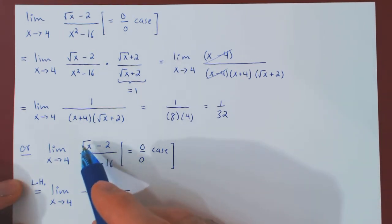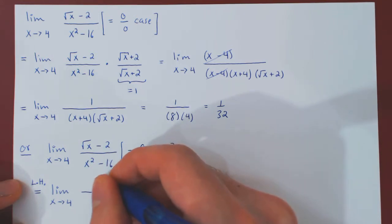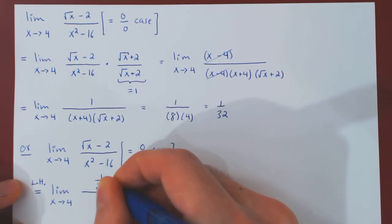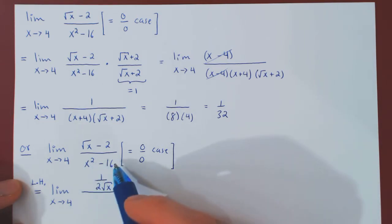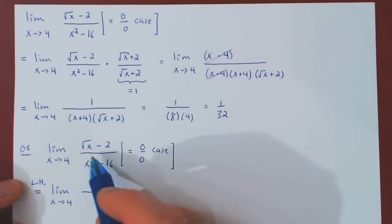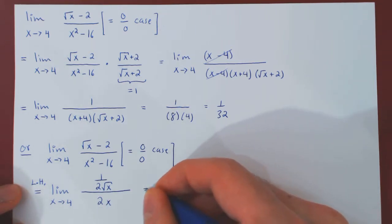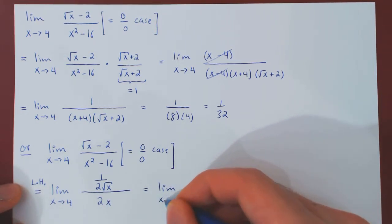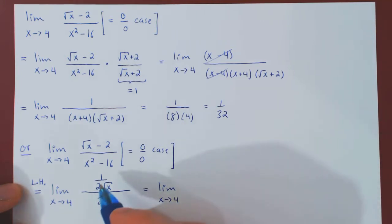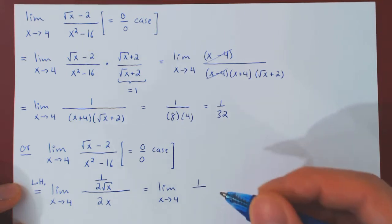The derivative of root of x minus 2 is simply 1 over 2 root of x. And the derivative of x squared minus 16 is simply 2x. We can simplify: 1 over 2 root of x, divided by 2x, gives simply 1 over 4x root of x.